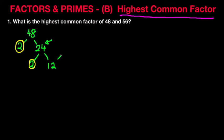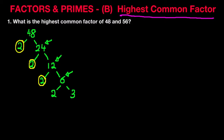We are now left with the number 12. We keep going. Again, 12 is an even number, so it is divisible by 2. 12 divided by 2 equals 6. We are now left with the number 6. 6 can be divided by 2 because it's an even number — that gives us 3. 6 divided by 2 equals 3, which is also a prime number. So we have found all the prime factors of the number 48.